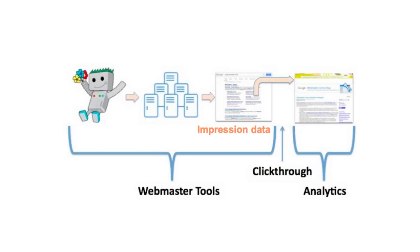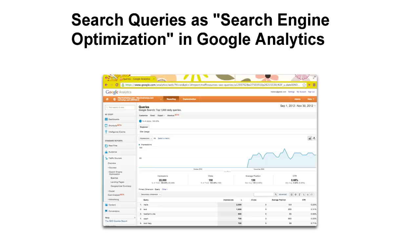If a user clicks and comes to your site, that's where traditional Google Analytics comes in. Search queries, however, also displays impression data, meaning you'll also have information about searchers when they see your site but might not click through. A couple of years ago, Webmaster Tools data was integrated as SEO reports in Google Analytics.